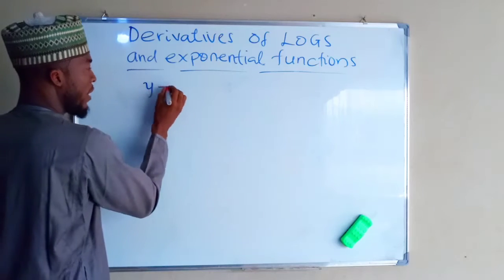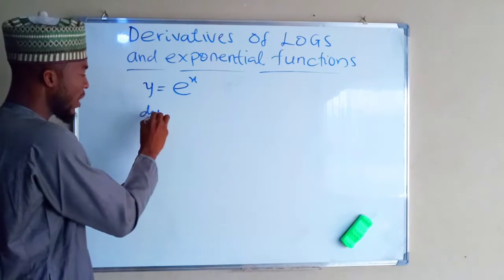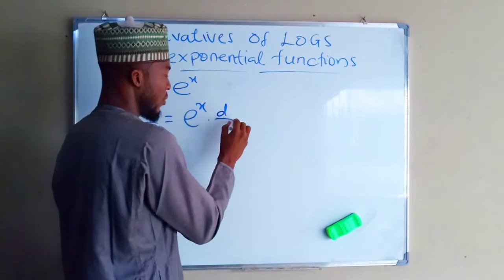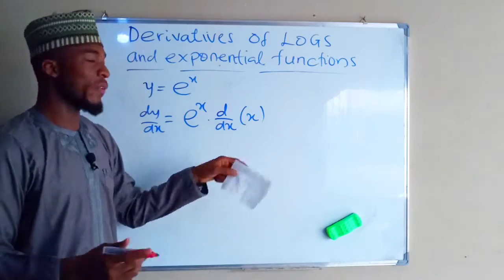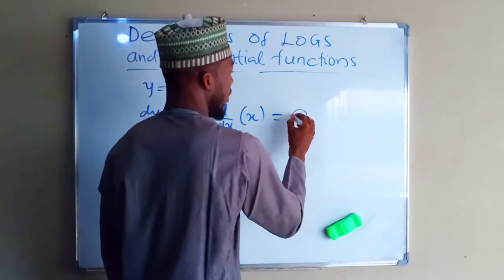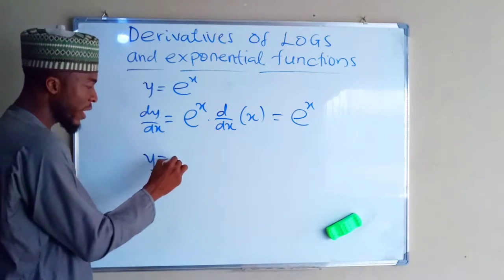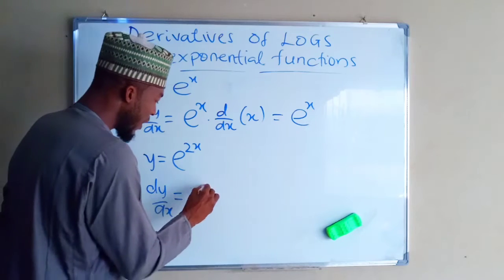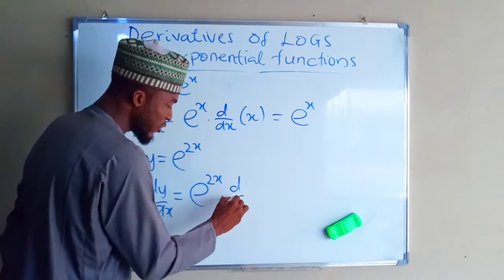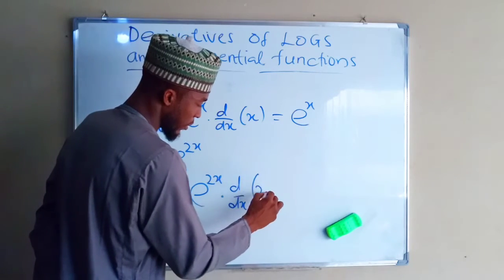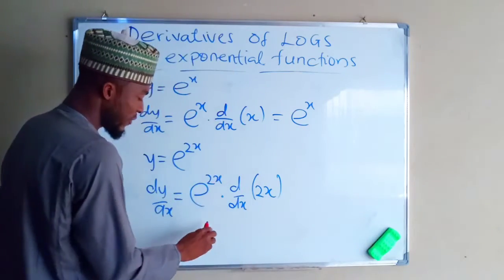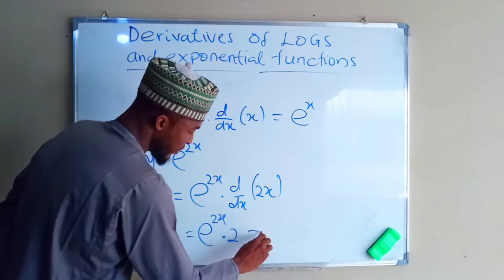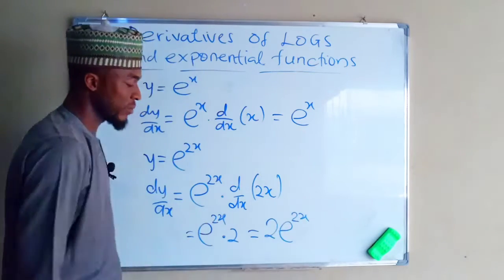If y equals e^x, then dy/dx is equal to e^x times the derivative of x, and since the derivative of x is 1, we get e^x. Now suppose y equals e^(2x); dy/dx is equal to e^(2x) multiplied by the derivative of 2x, which is 2, giving us 2e^(2x).